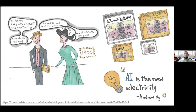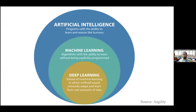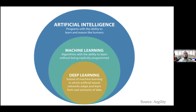If you are new to this domain, you may hear the terms AI, machine learning, and deep learning used interchangeably. Machine learning is a subdomain of artificial intelligence in which we design algorithms that learn without being explicitly programmed. Deep learning is a further subset of machine learning dealing specifically with artificial neural networks that typically learn from vast amounts of data. Today's talk will be mostly around deep learning.